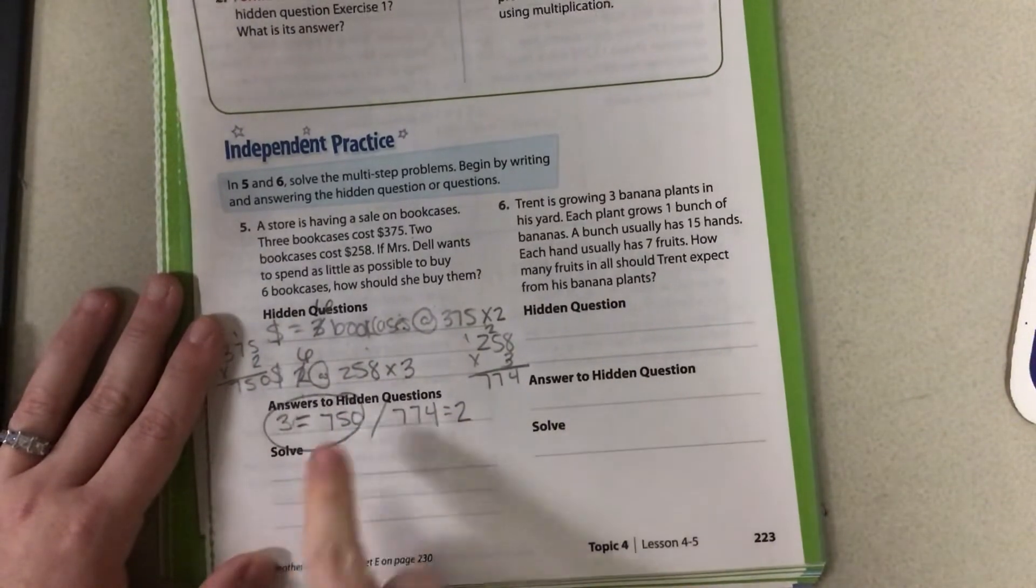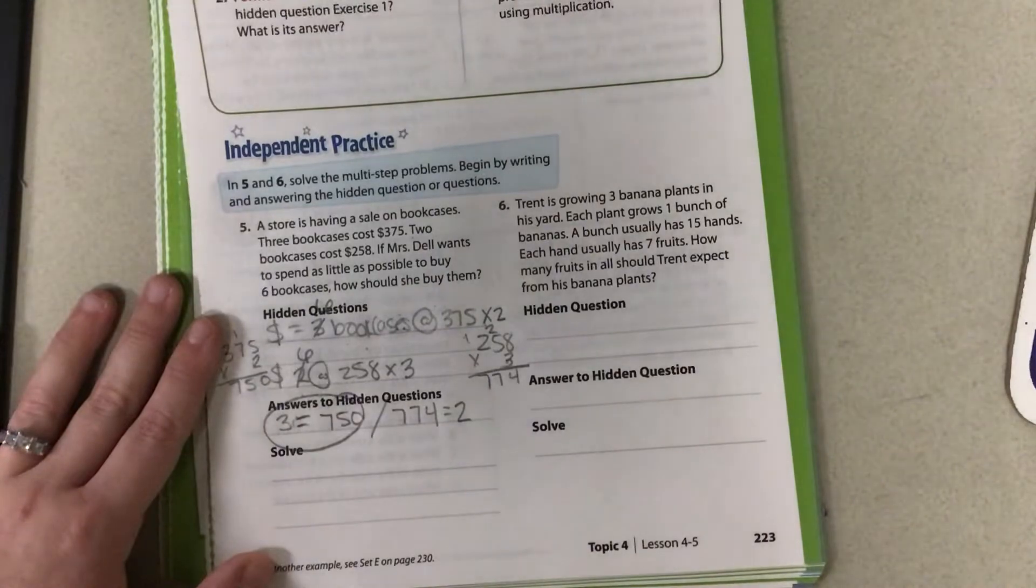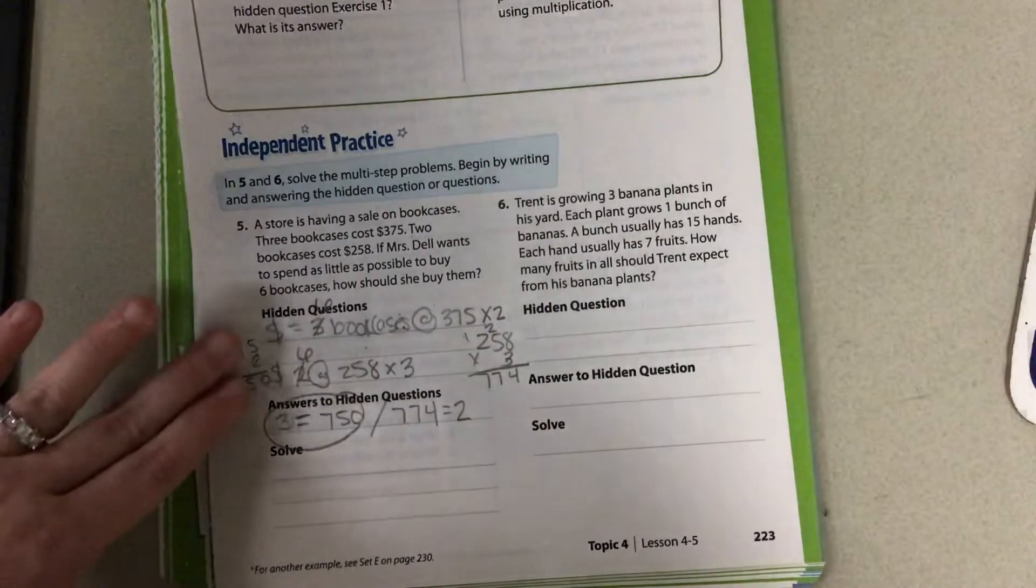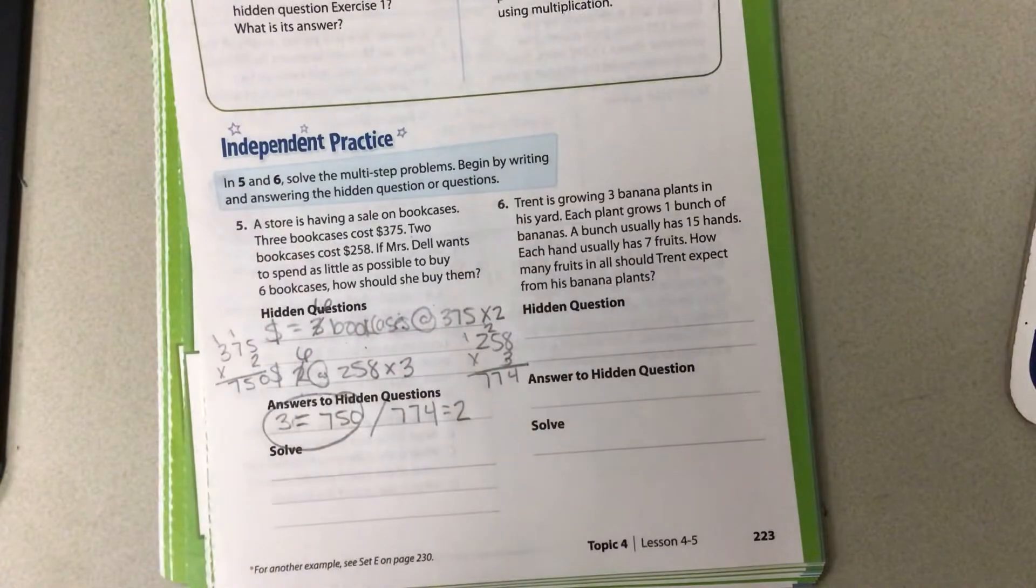So I'm wanting the 3 sets because it is cheaper. So it's finding those hidden questions and then breaking it down and working step by step.